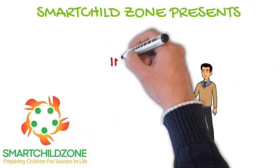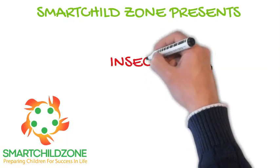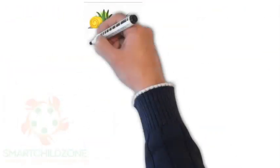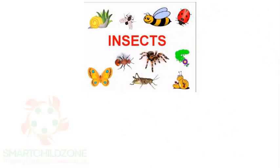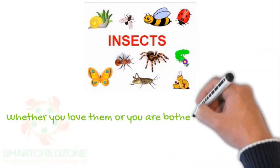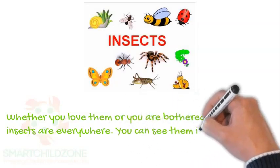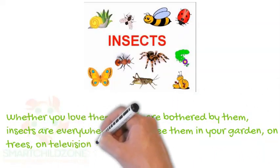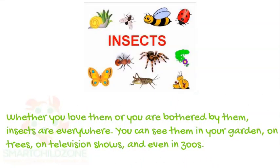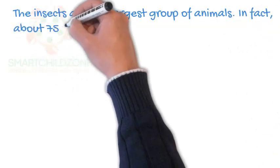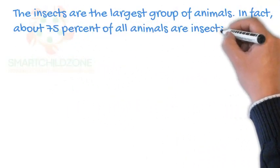Smart Child Zone presents: Insects. Whether you love them or you are bothered by them, insects are everywhere. You can see them in your garden, on trees, on television shows, and even in zoos. Insects are the largest group of animals. In fact, about 75% of all animals are insects.